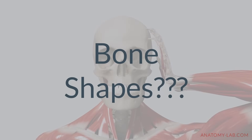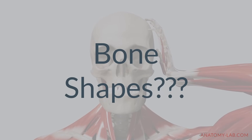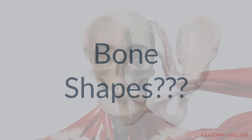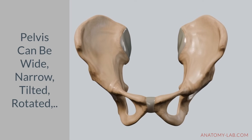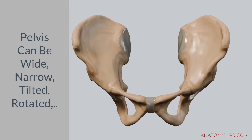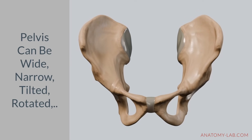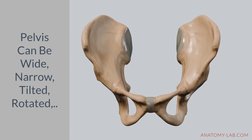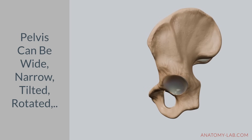You may ask yourself, what does he mean with bone shapes? Let's take the pelvis as an example, which can vary in several ways. It can be wide or narrow, or it can also be tilted or rotated either forward or backwards.